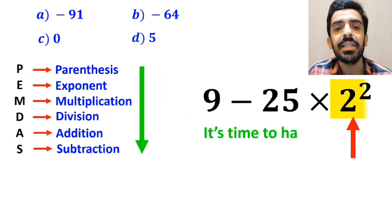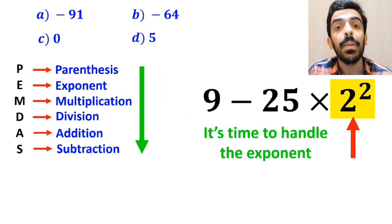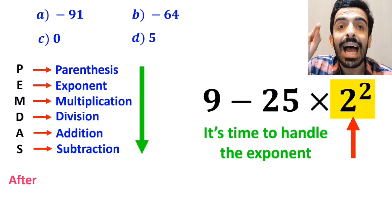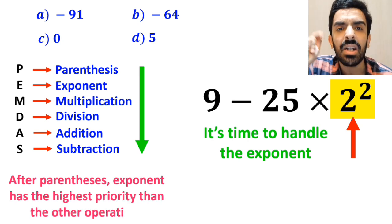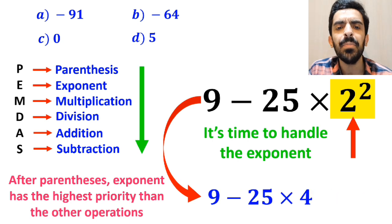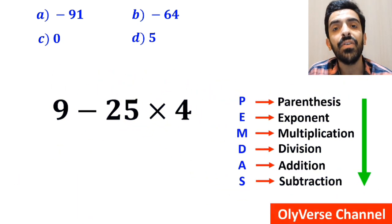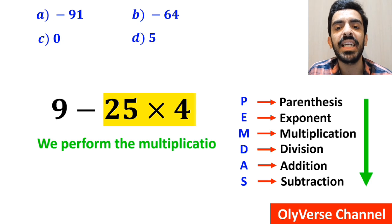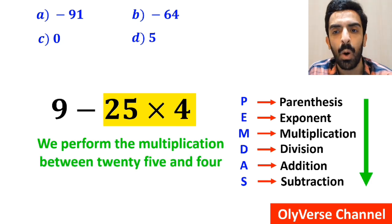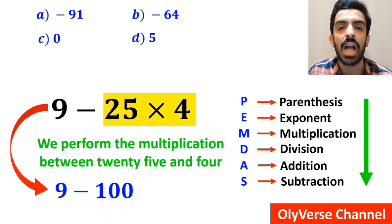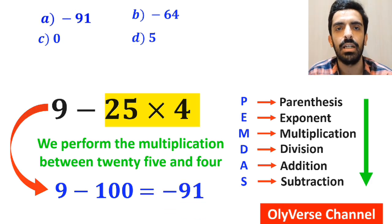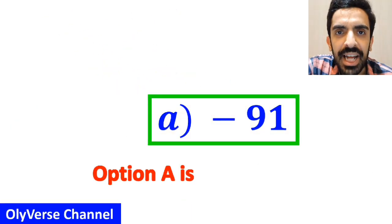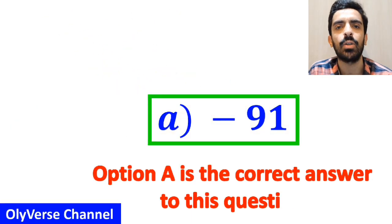In the following step, it's time to handle the exponent. Because according to the PEMDAS rule, after parenthesis, exponents have the highest priority over the other operations. So this expression becomes 9 minus 25 multiplied by 4. In the final step, we perform the multiplication between 25 and 4, and simplify this expression to 9 minus 100, which finally gives us the answer negative 91. Therefore, option A is the correct answer to this question.